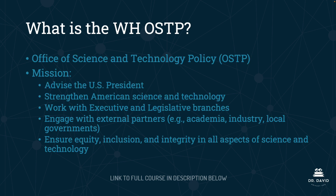OSTP stands for the Office of Science and Technology Policy. This is an office within the White House, and the mission of the office is to advise the U.S. President, strengthen American science and technology, work with the executive and legislative branches, engage with external partners across academia, industry, and local governments, and ensure equity, inclusion, and integrity in all aspects of science and technology. I don't think you're going to be tested on this for the AIGP exam, but I think it's important to know who authors documents, and this extra context is likely helpful.